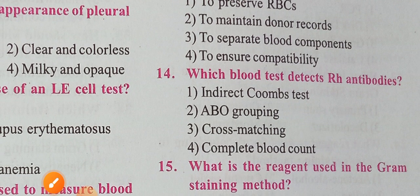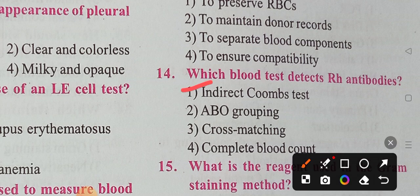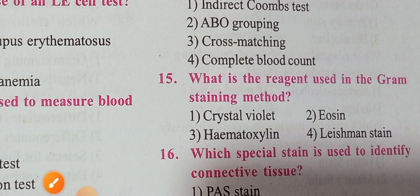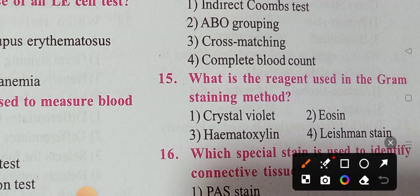Next question: which blood test detects Rh antibodies? The options are indirect Coombs test, ABO grouping, cross matching, and complete blood count. Option one, indirect Coombs test, is the correct answer — it is used to detect Rh antibodies. Next question: what is the reagent used in the Gram staining method? Option one, crystal violet, is the correct answer.